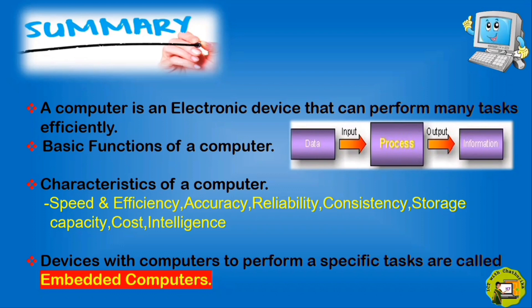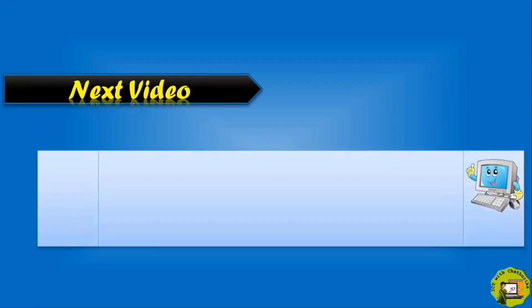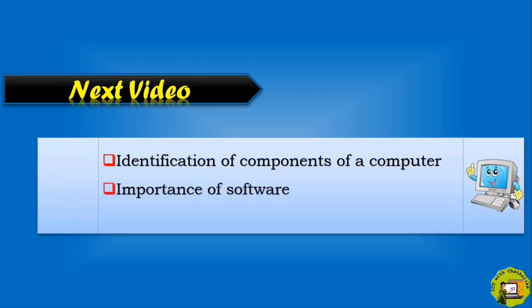Examples for these devices are washing machine, ATM, modern television, smartphone, digital camera. In my next video, I hope to discuss these three topics: Identification of components of a computer, Importance of software, and Role of the computer in various sectors.